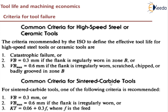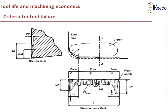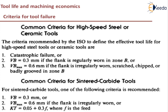Similarly, there is a criteria for sintered carbide tools: VB will be equal to 0.3 mm and VB max will be equal to 0.6 mm. In the case of crater wear, KT will be equal to 0.06 plus 0.3 times F, where F is feed. So the depth of the crater will be 0.06 + 0.3F. If these limits are crossed, the tool life is over and we need to go for re-sharpening. This was about the criteria for tool failure.